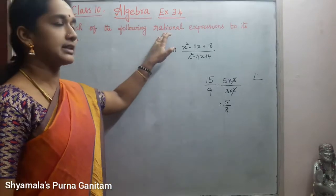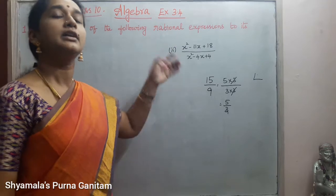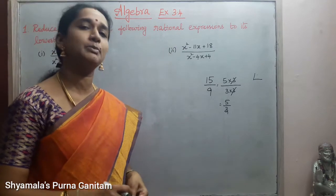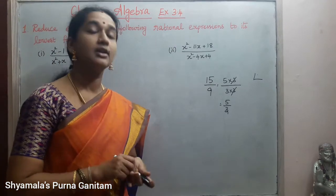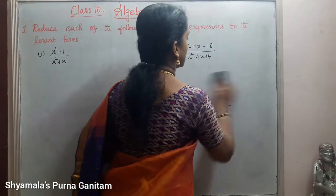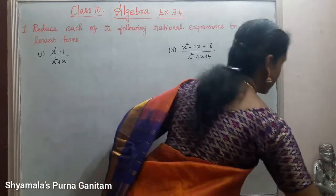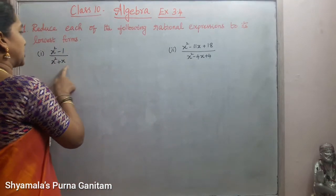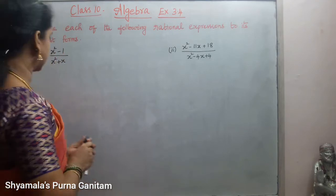So the same procedure we are going to do for these sums. Since they are given as rational expressions, we need to find the factors using splitting the middle terms or any similar method. So the first one is x squared minus 1 by x squared plus x.